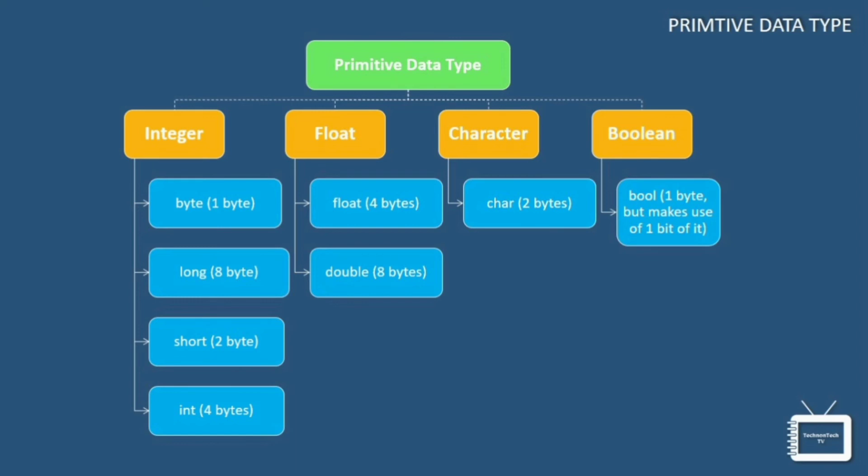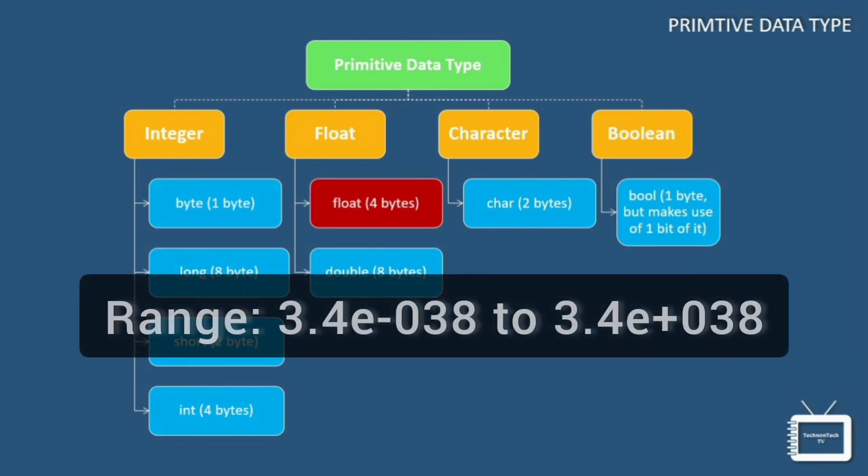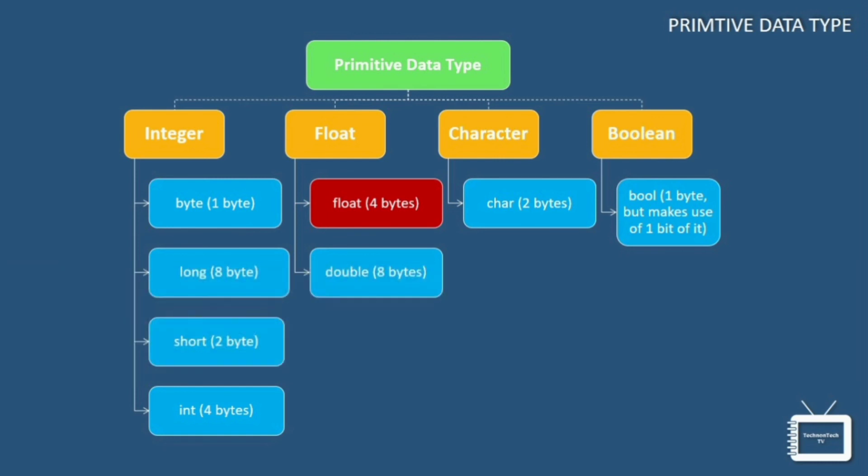So that was all about the long data type. Now let's move on and see floating data types. You should use a floating point type whenever you need a number with a decimal such as 8.88 or 3.1455. Float data type can store fractional numbers from this to this.